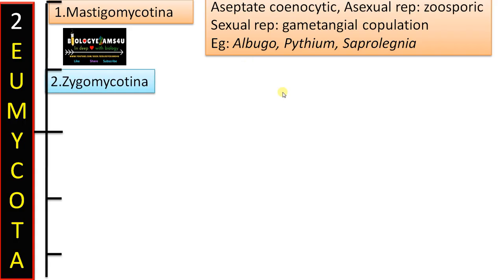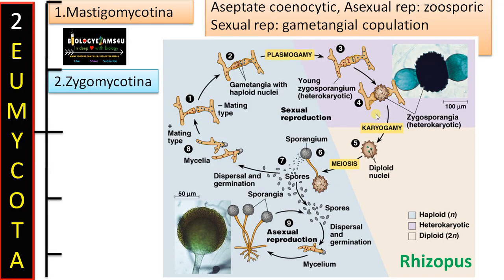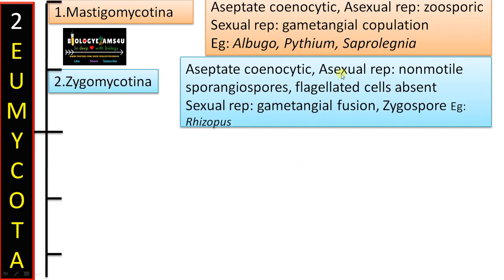The second subdivision is Zygomycotina. The most common example is Rhizopus or bread mold. The hyphae are also aseptate without septation — coenocytic. Spores are non-motile without flagella, often called aplanospores, and there is sporangiospore formation inside sporangia. The sexual spore is the zygospore, which is a very resistant spore to extreme environments. Flagellated cells are absent; sexual reproduction is by gametangial fusion. Example is Rhizopus.